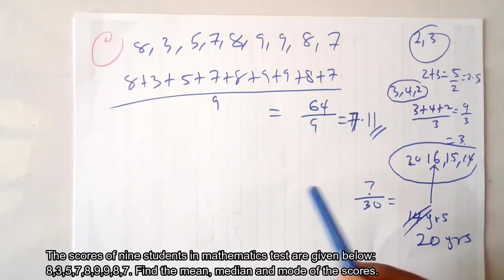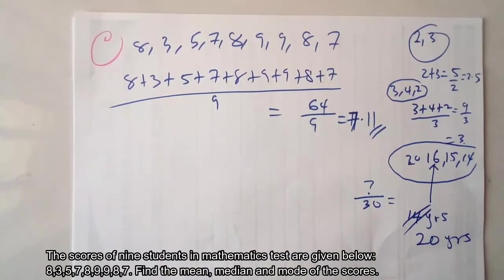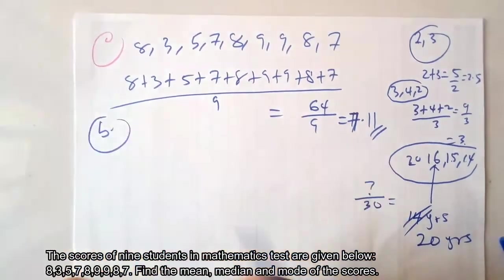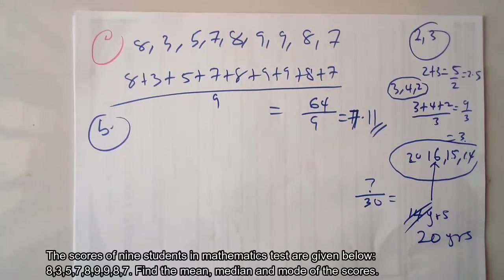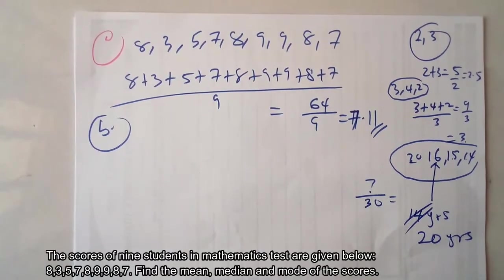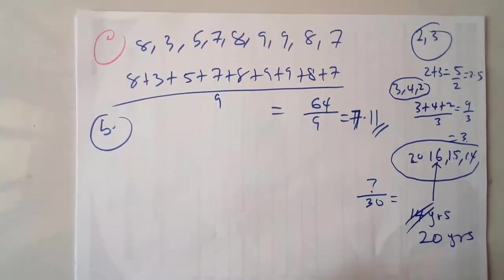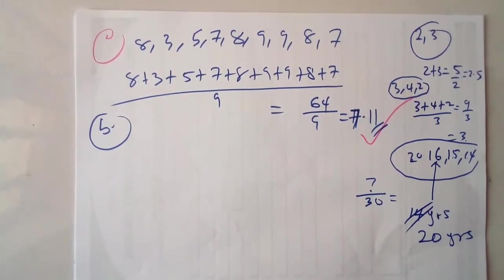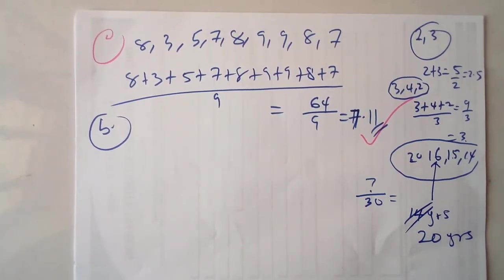That is how to calculate the mean — you sum everything, then divide the sum by how many digits you have. Now for the median: the word sounds like 'middle,' and that is exactly what it is. The median is the middle term, but with a condition — after arranging the data in ascending order. Ascending means from the smallest to the highest, which is how we normally count.